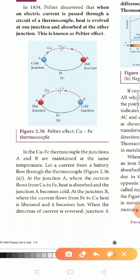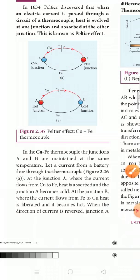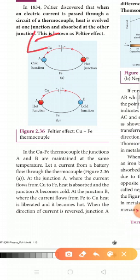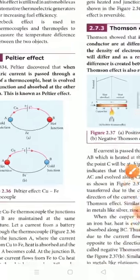We will see the Seebeck effect uses a galvanometer, while the Peltier effect uses a battery. In the Peltier effect, if junction A is the cold body then junction B is the hot body, and vice versa — if the current direction is reversed, A becomes hot and B becomes cold. This is a copper-iron thermocouple demonstrating the Peltier effect.